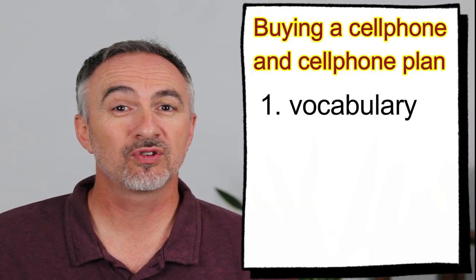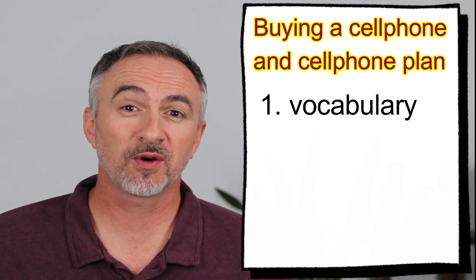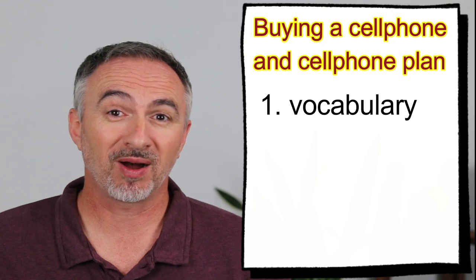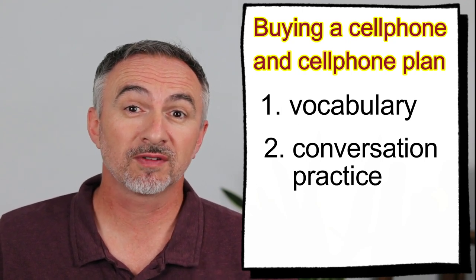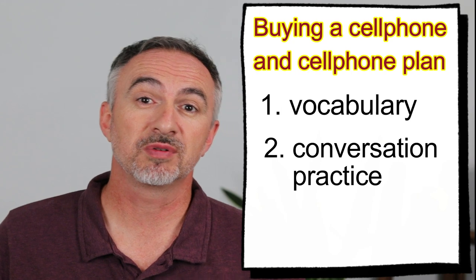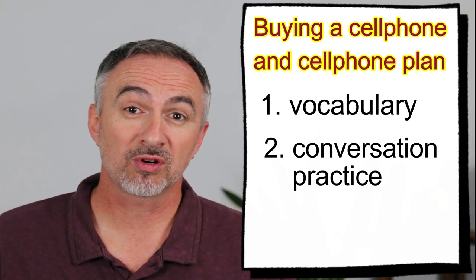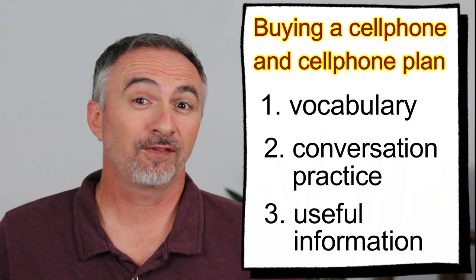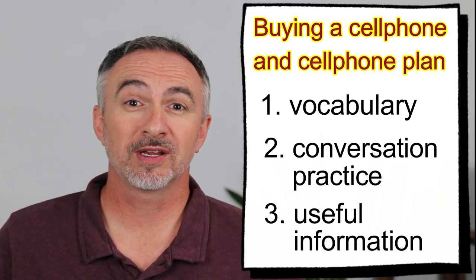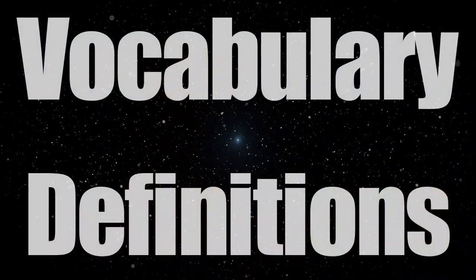Today's lesson is in three parts. The first part I'll introduce you to the vocabulary — the useful vocabulary you can use when you go and buy a new phone. In the second part we'll listen to a conversation that uses that really important vocabulary. The conversation is between somebody looking to buy a new cell phone and a store clerk. In the third part I'll give you some really useful information that'll give you knowledge that can help you when you go into the store and want to buy yourself a new cell phone. Let's get started with that first part — learning the useful vocabulary you can use when you go to buy yourself a new cell phone.